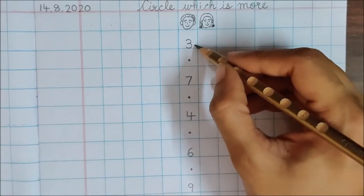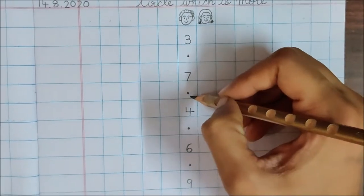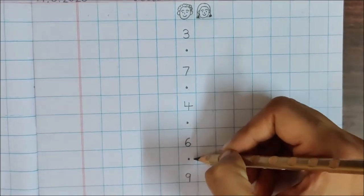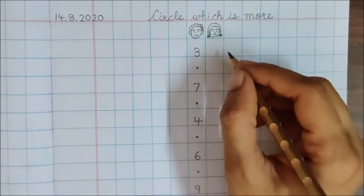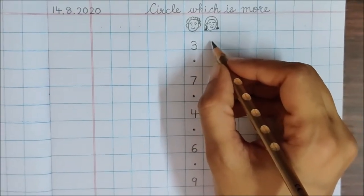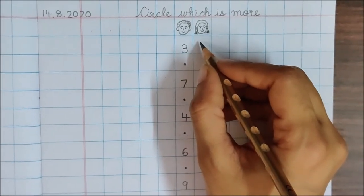Let us check the numbers again. 3 dot, 7, dot, 4, dot, 6, dot, 9. Now let us go to mama's side. Now below mama's drawing, write down 5.